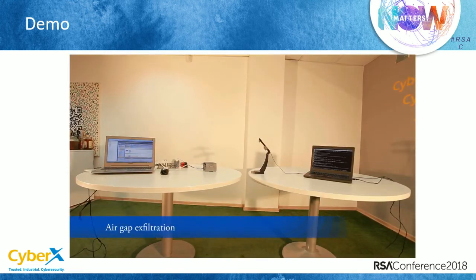Here's our setup. On the right is the antenna with the SDR connected to a computer, and the device is on the left with another computer. We used that left computer just for configuring the device and uploading our ladder logic — the one that sends the AM frequencies, the radio frequencies.